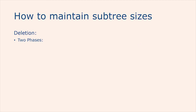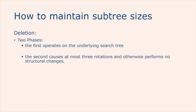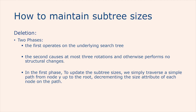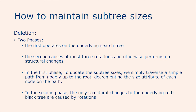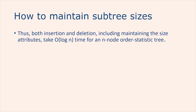Deletion from a red-black tree also consists of two phases. The first operates on the underlying search tree, and the second causes at most three rotations and otherwise performs no structural changes. The first phase either removes one node y from the tree or moves it upward. To update the subtree sizes, we traverse the simple path from node y starting from its original position up to the root, decrementing the size attribute of each node on the path. Since this path has length O(log n), the additional time in the first phase is O(log n). We spend only O(1) additional time updating size attributes in the second phase, as with insertion. Thus, both insertion and deletion, including maintaining the size attributes, take O(log n) time for an n-node order statistic tree.